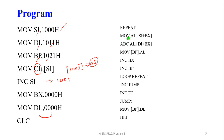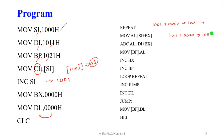Move BX equal to 0000 — this is the byte pointer. Move DL equal to 00 — this is the final carry value. The main step of the program: move AL, [SI+BX]. The SI value is 0001 and BX is 0000, so this memory location contains some value which is moved into AL. Next, ADC is used because we are adding with carry. The destination address DI+BX contains some value which is added to AL.